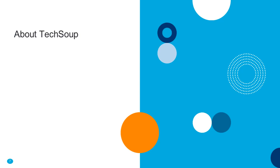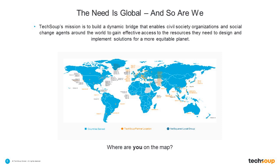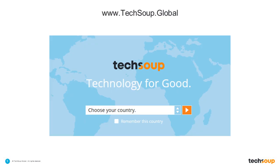A little about TechSoup: we're a nonprofit serving almost all countries shown on the map. We'd love to know where you're joining from — we have about 330 people in the room right now, with folks from Oregon, Wisconsin, Minnesota, and beyond. If you're joining from outside the US, visit TechSoup.global and choose your country from the drop-down to learn which discounts and donations are available to you.